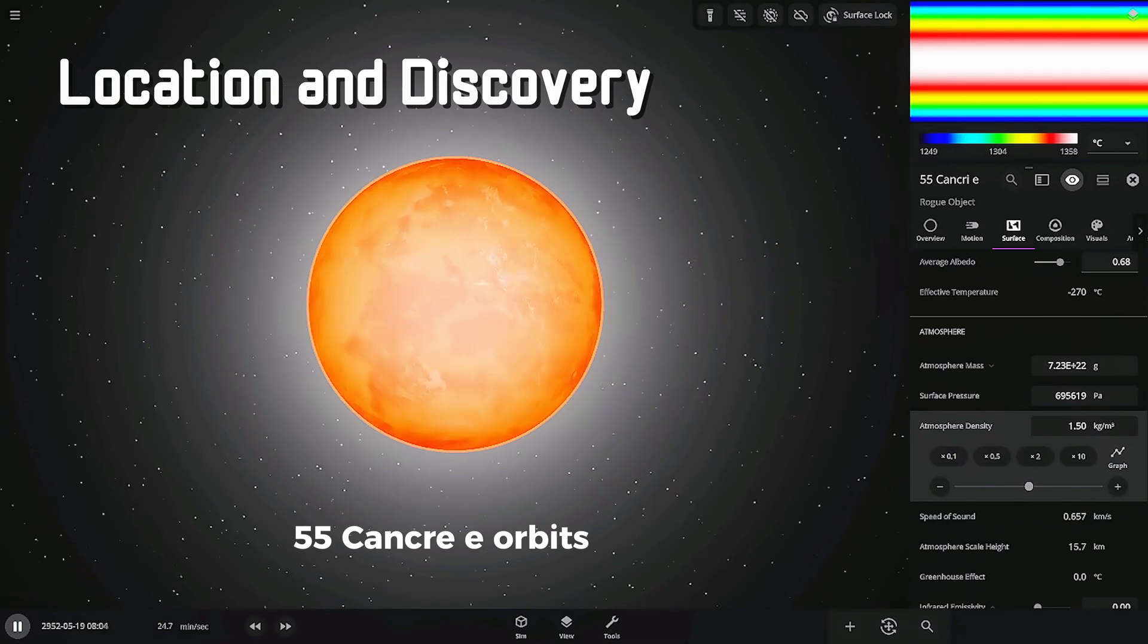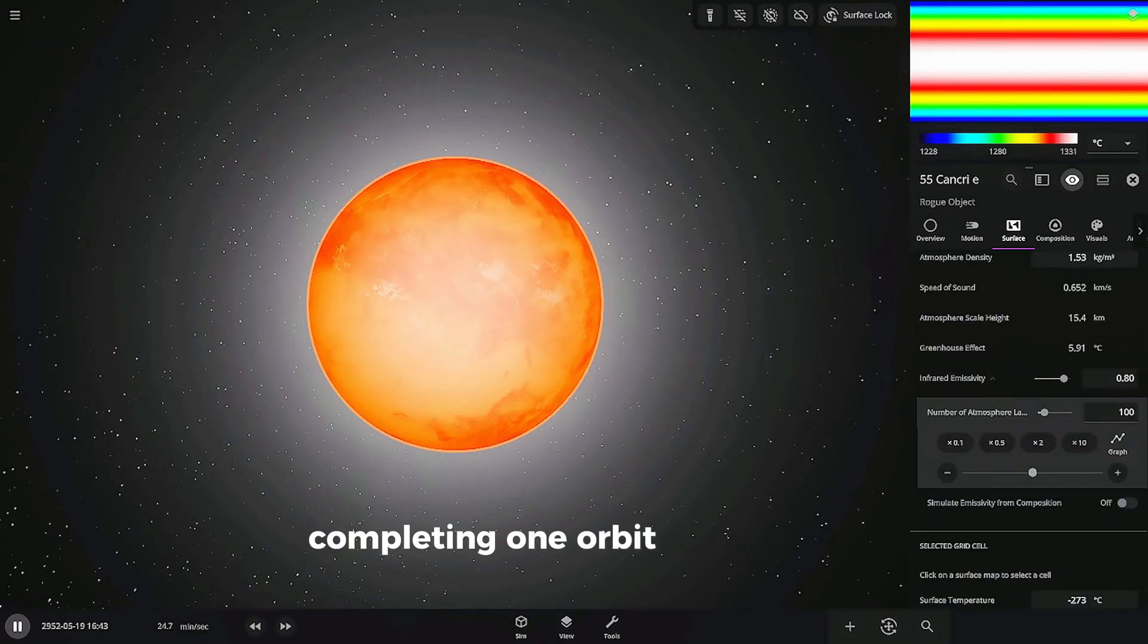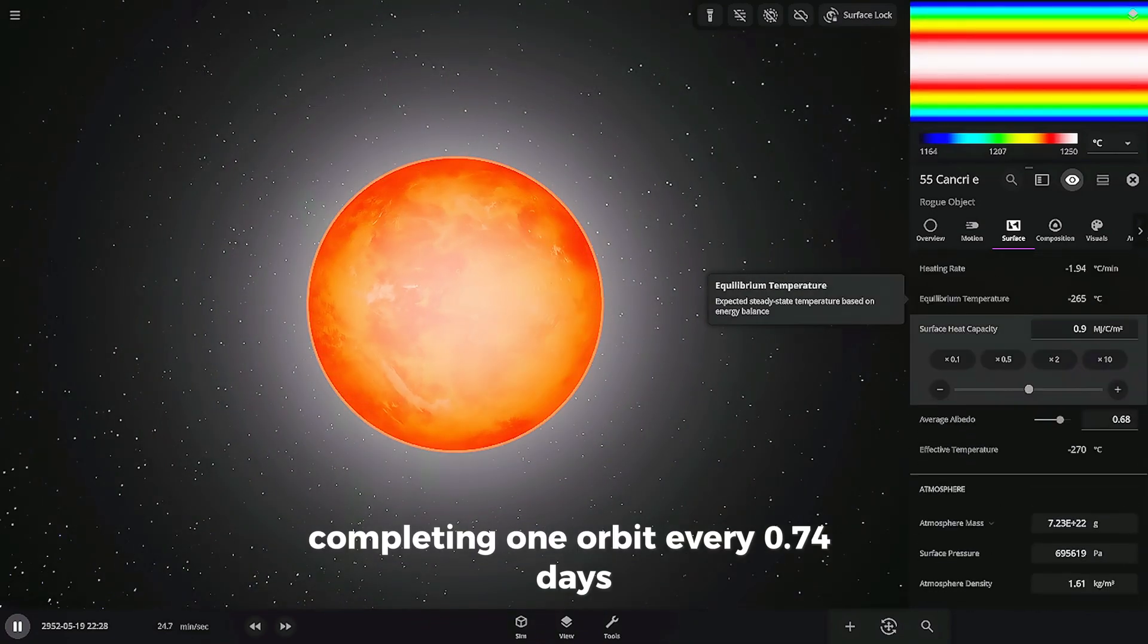55 Cancri e orbits very close to its host star, completing one orbit every 0.74 days, about 18 hours.